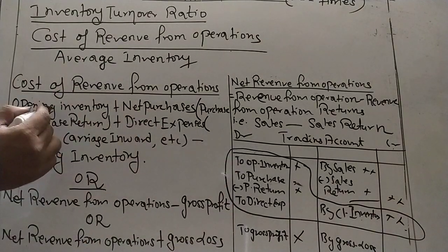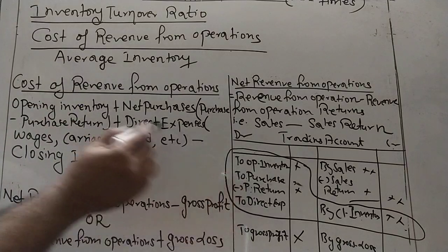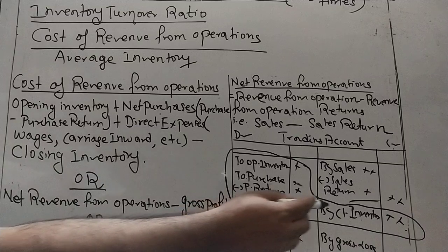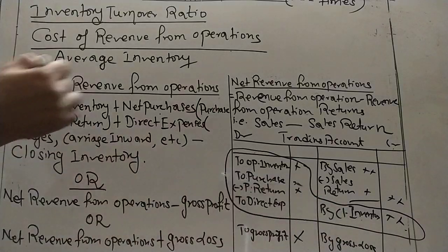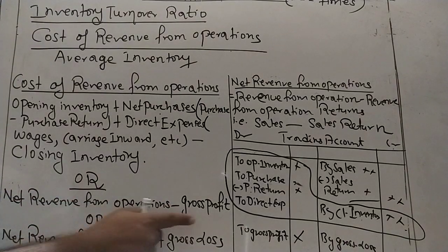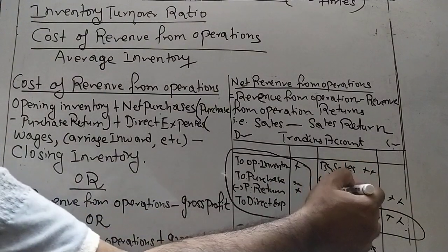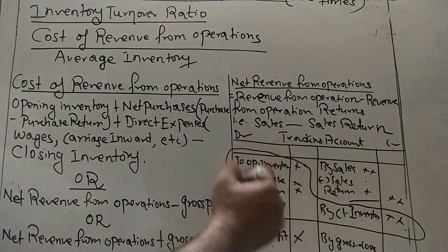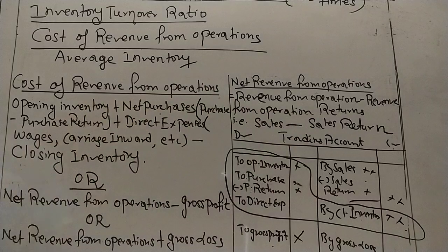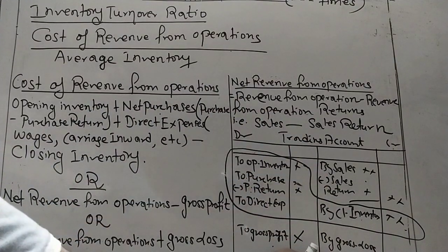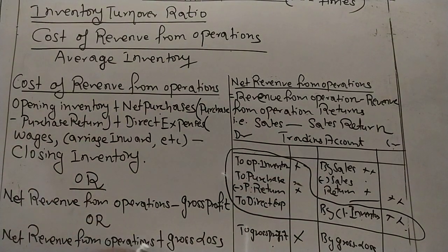To summarize: Cost of Revenue from Operations equals Opening Inventory plus Net Purchases (purchases minus purchase returns) plus Direct Expenses minus Closing Inventory. Or alternatively: Revenue from Operations minus Gross Profit. Or: Revenue from Operations plus Gross Loss. Revenue from Operations itself means Sales minus Sales Return.